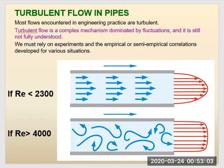For turbulent flow, the Reynolds number is larger than 4,000. The remaining turbulent flow content will be covered in the Thursday session. Thank you.